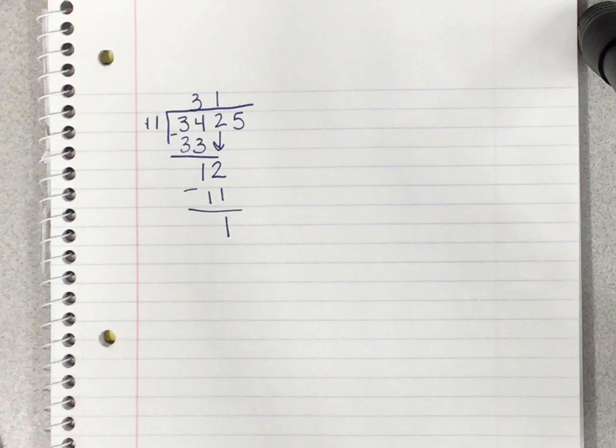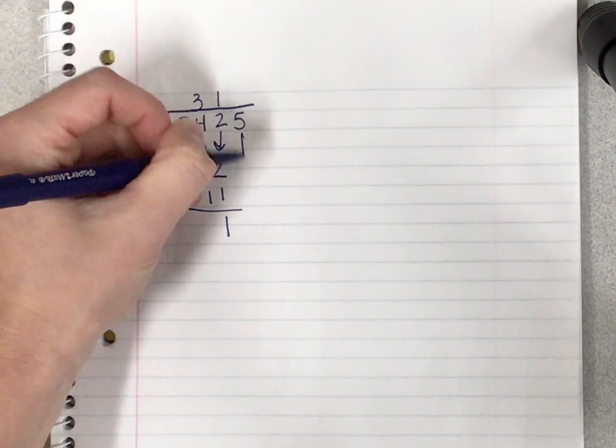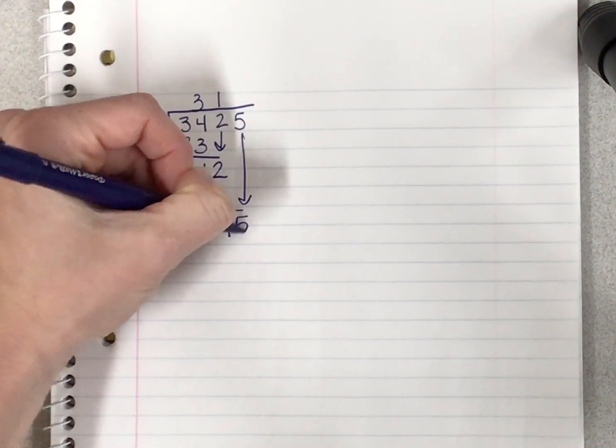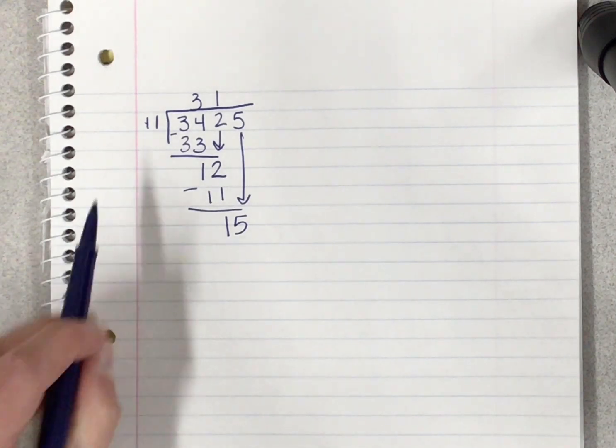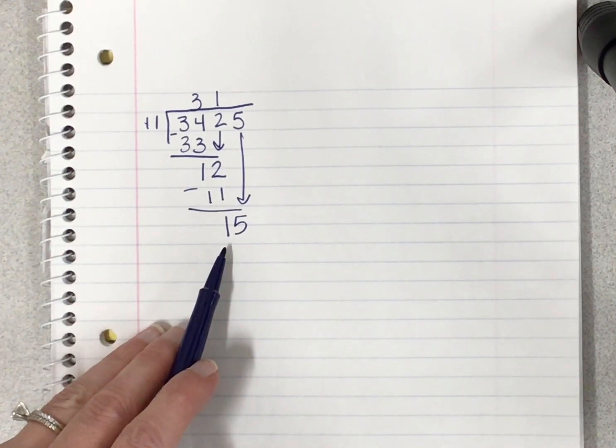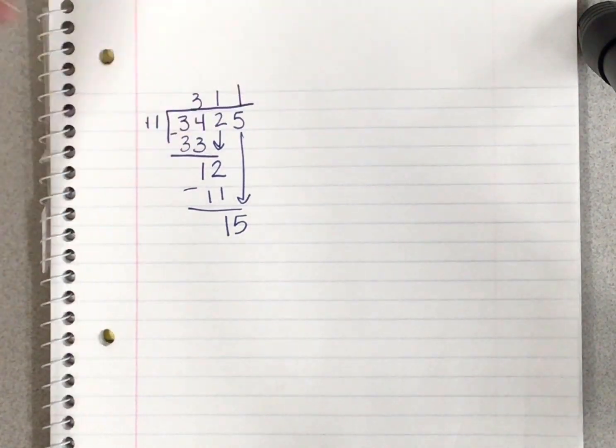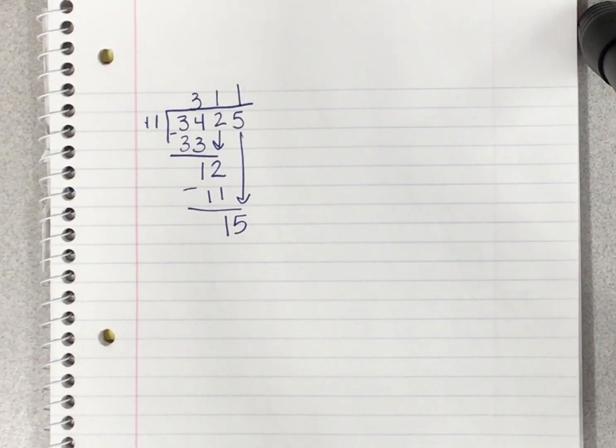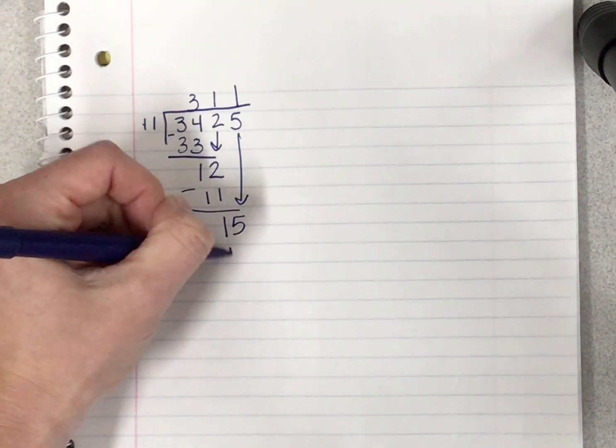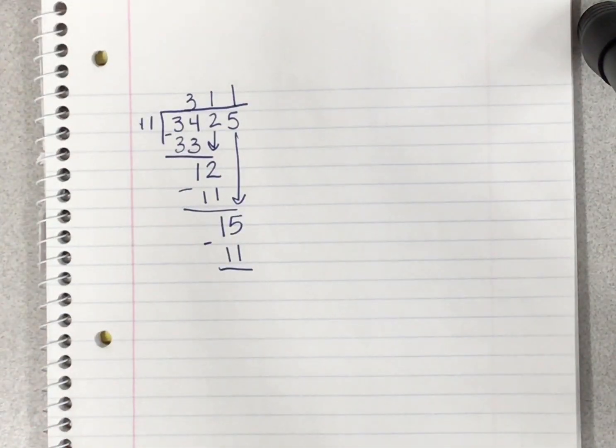I bring down my last number in line, which was 5. I ask myself how many 11s can go into this 15. 11 goes into 15 one time without going over. 11 times 1 is 11. I place that below my 15 and I subtract. 15 minus 11 is 4.